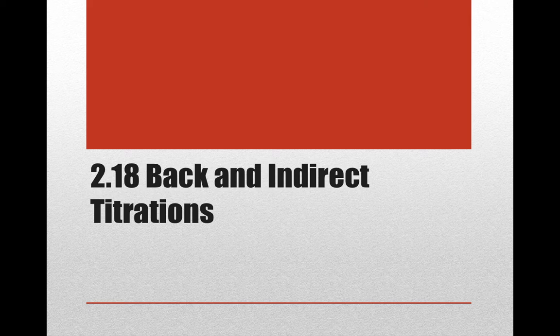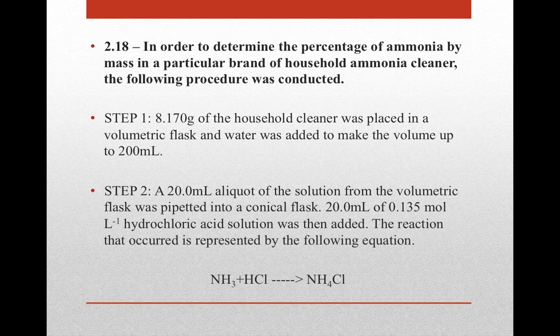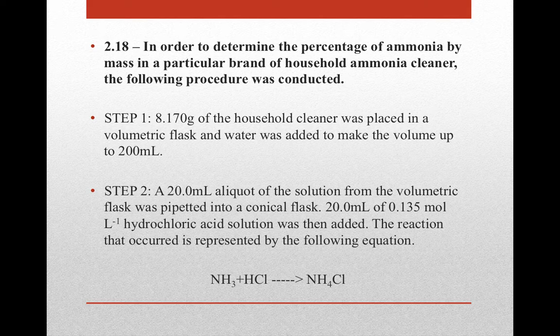In this video we're looking at question 2.18 from the textbook on back and indirect titrations. For question 2.18 of the Essentials book for Chemistry, it says that in order to determine the percentage of ammonia by mass in a particular brand of household ammonia cleaner, the following procedure was conducted — a multiple step process that we have to analyse to calculate the percentage of ammonia.